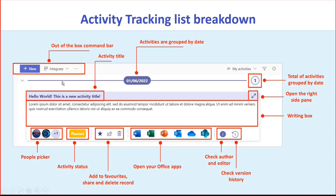And if we look at the list breakdown with the main components, each record has a title bar, a writing box, and a toolbar where we can keep track of various information — for example, a people picker and activity status. There are also out-of-the-box tools like the share icon, the bin, etc. And I have created a section where we can have a point of access to our favorite Office apps.